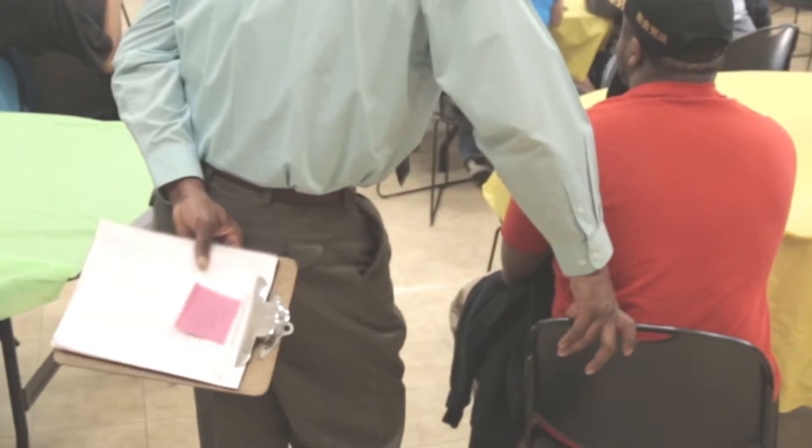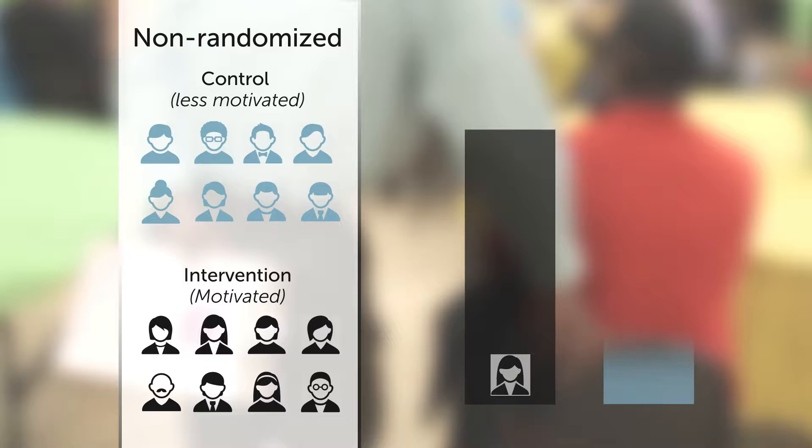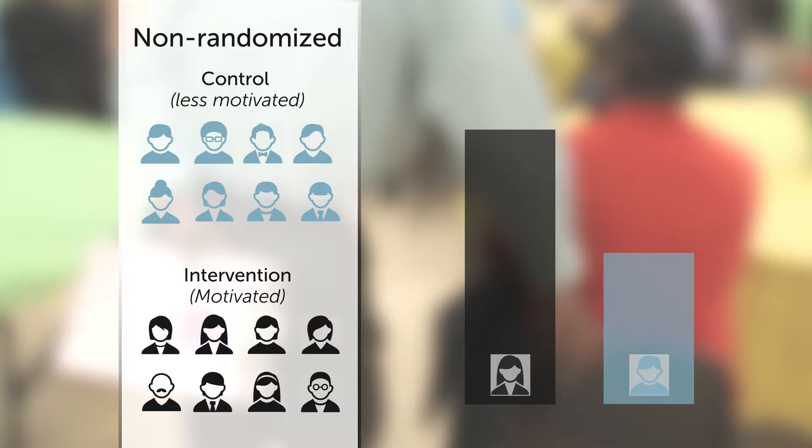To determine whether a policy, program, or intervention caused outcomes to improve, a study's design must rule out causes of improvement other than the intervention. Take a job training program as an example. In a non-randomized trial, perhaps the people who enroll in the program are generally more motivated and persistent than those who tend not to enroll. Since motivated people are more likely to succeed in the labor market than less motivated people, any difference in outcomes between the two groups could reflect their different motivation levels rather than the program's effectiveness.